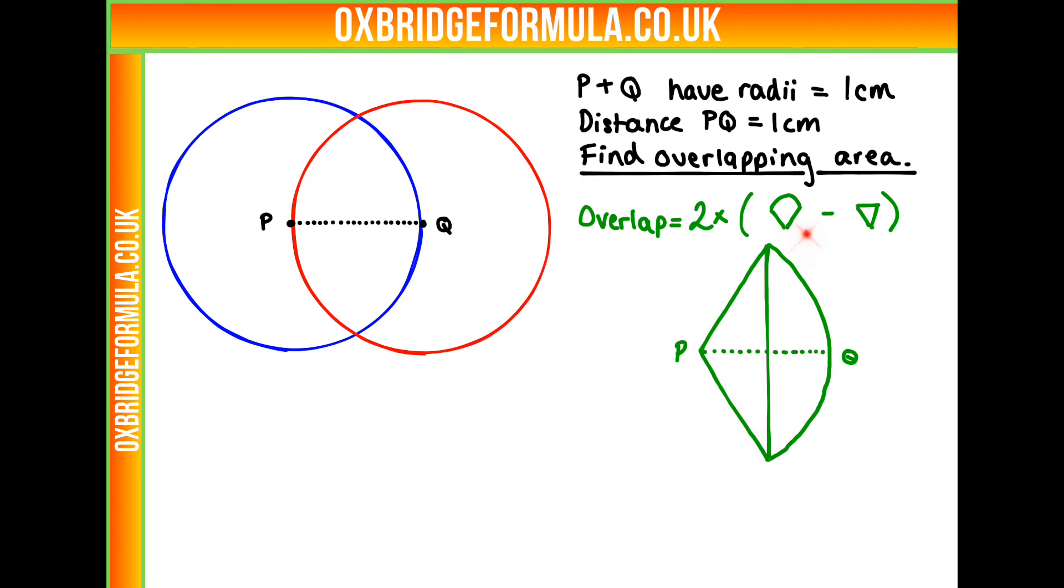So how do we work out the area of our segment? It's going to be theta over 360 times pi r squared, with our theta being this angle here, and our radius being these sides here. We know that has to be 1 because all of our circles have a radius of 1cm.